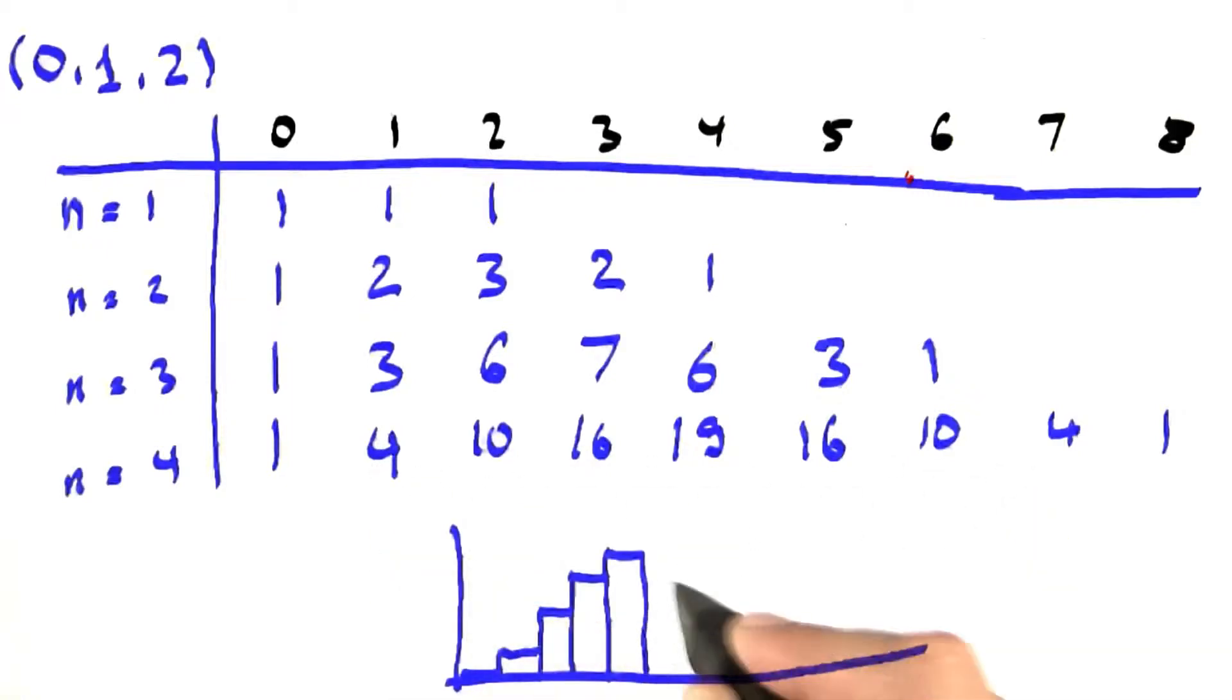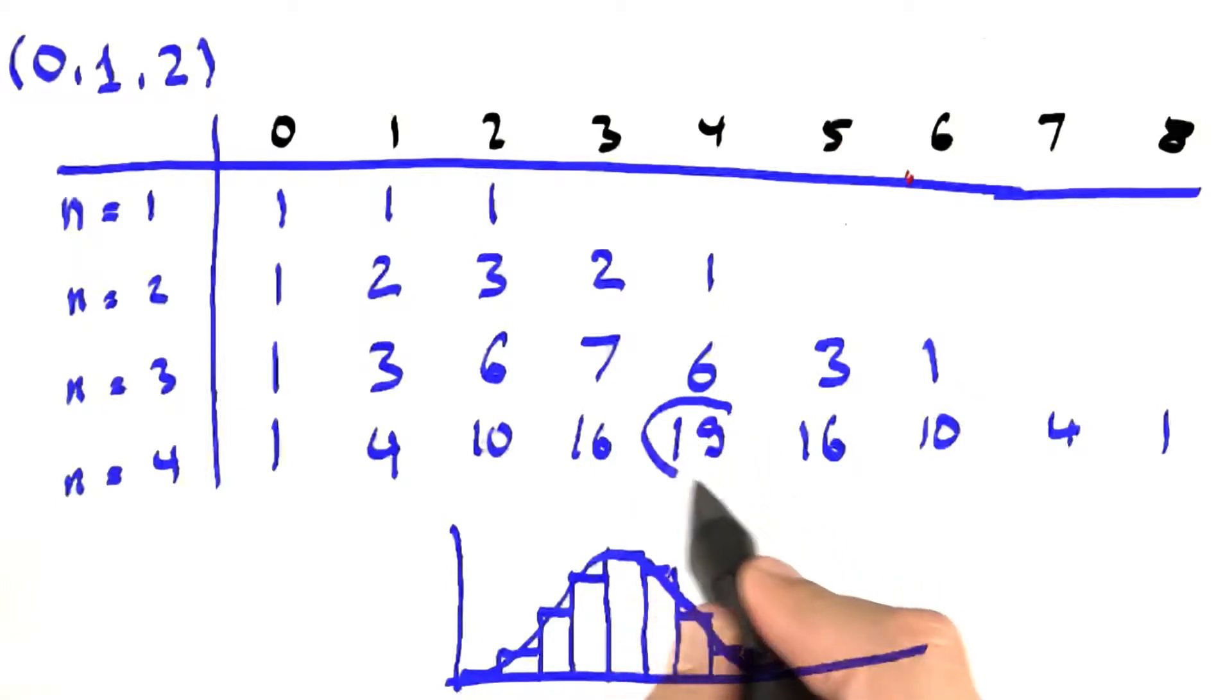And when we graph this, it looks about like this. It's a big function that has the highest value at the center, 19, and it falls down in some interesting way that looks awfully much like the way the previous exercise fell down.